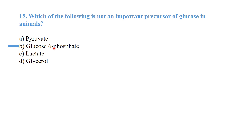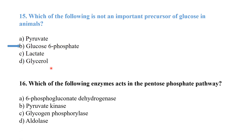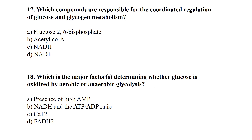Which enzyme acts in the pentose phosphate pathway? 6-phosphogluconate dehydrogenase acts in the pentose phosphate pathway. Which compounds are responsible for the coordinated regulation of glucose and glycogen metabolism? Fructose 2-phosphate is mainly responsible for the coordinated regulation of glucose and glycogen metabolism.